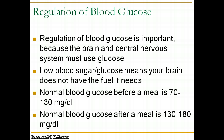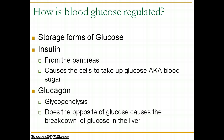It's very important that the brain and central nervous system use glucose. Low blood sugar or low glucose means your brain doesn't have the fuel it needs. Normal blood glucose before a meal is about 70 to 130 milligrams per deciliter, and it goes higher after a meal. Blood glucose is regulated primarily by two hormones — insulin and glucagon — which have opposite effects.